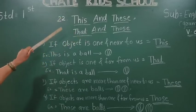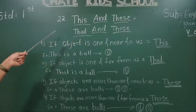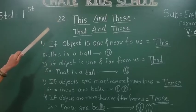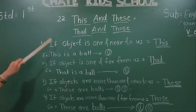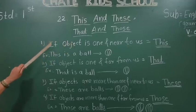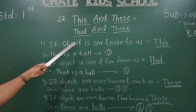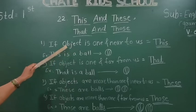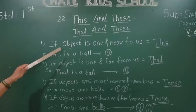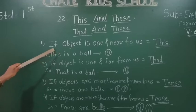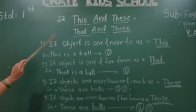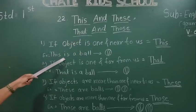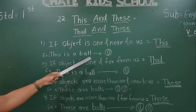This and These. 'This' is used when the object is near to us. If the object is one and near to us, then we use 'This'. For example: This is a ball.